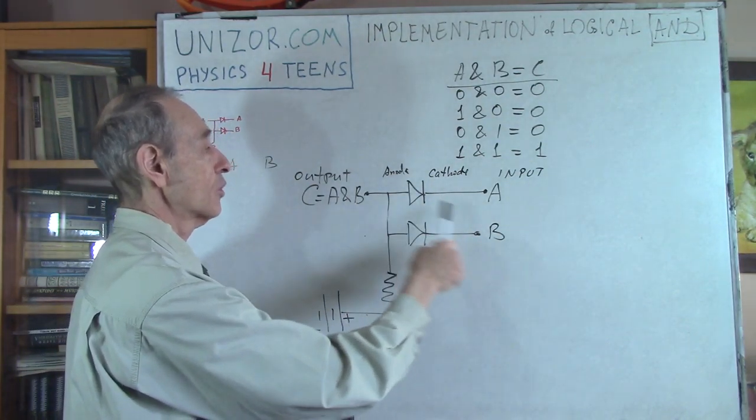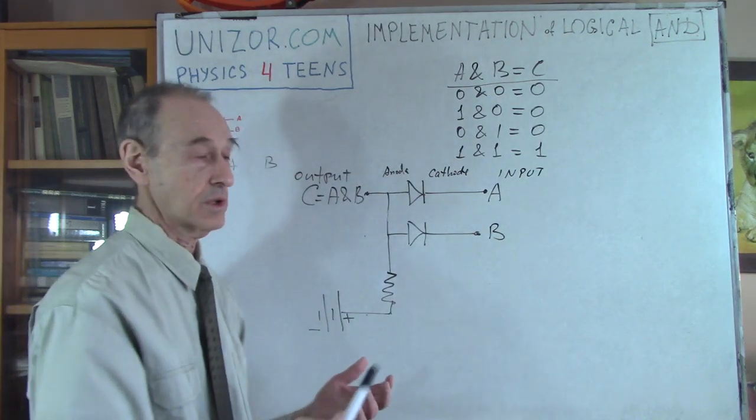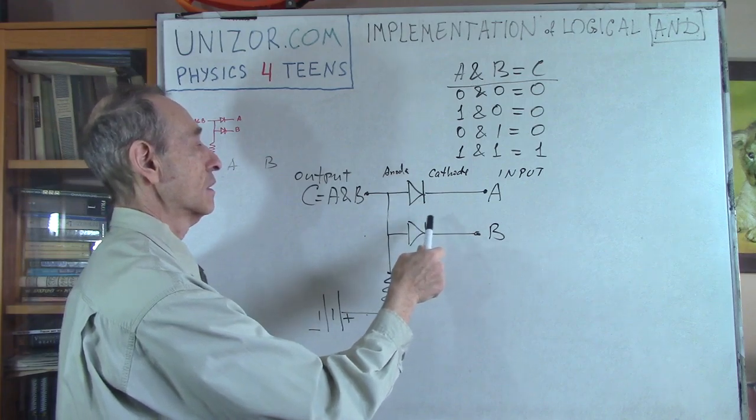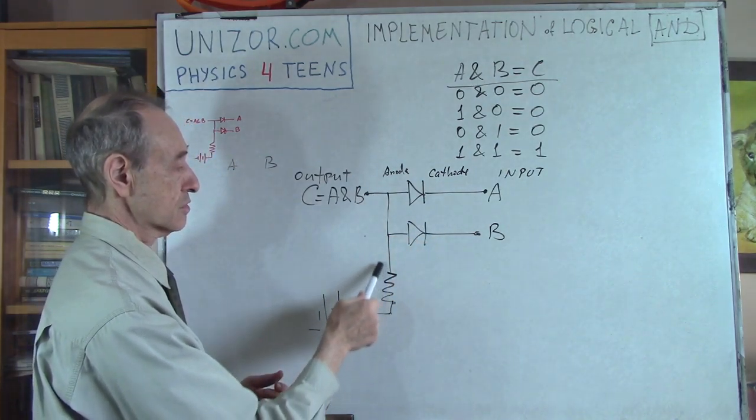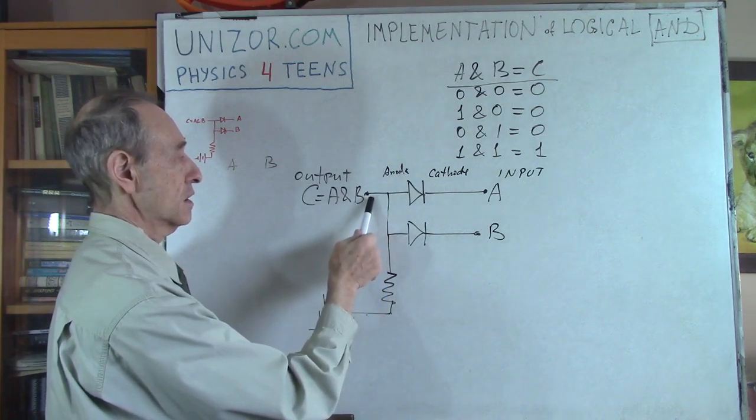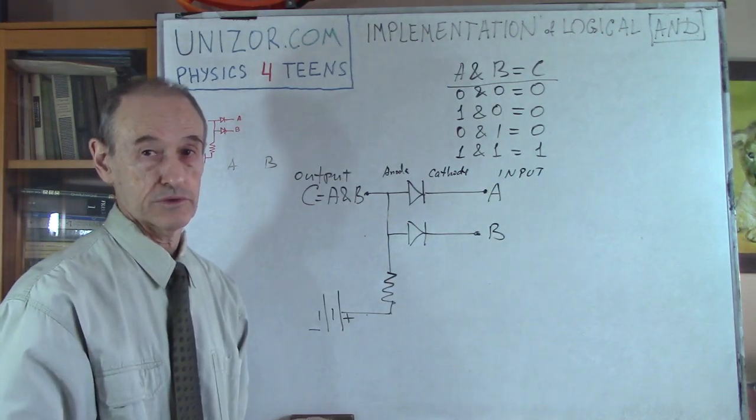Basically there is no change of electrons anywhere at all. The electrons are not moving. That's why this positive charge through this resistor is here, only if both of them are positively charged.